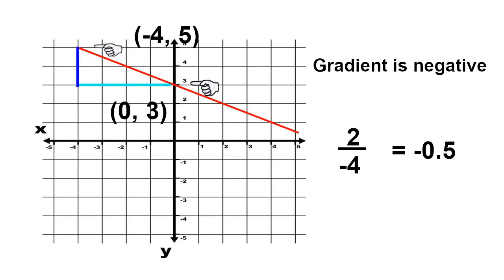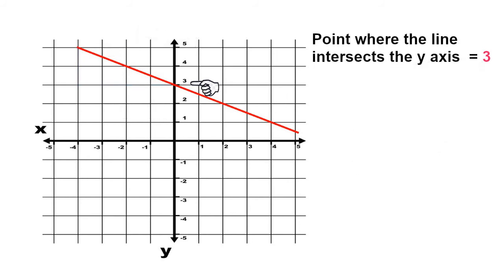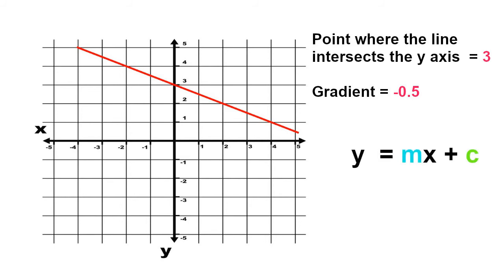Now I have the gradient, I need to find the point where the line intersects the y-axis. We can see the line intersects the y-axis at 3. So the point where the line intersects the y-axis equals 3, and the gradient is negative 0.5. Substituting these numbers into the equation for a straight line, y equals mx plus c, gives y equals negative 0.5x plus 3.